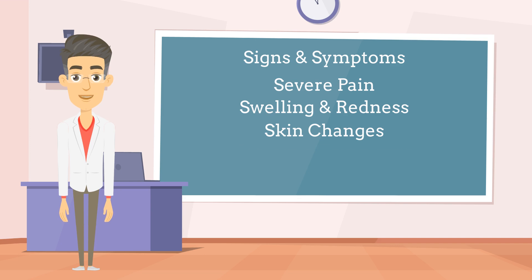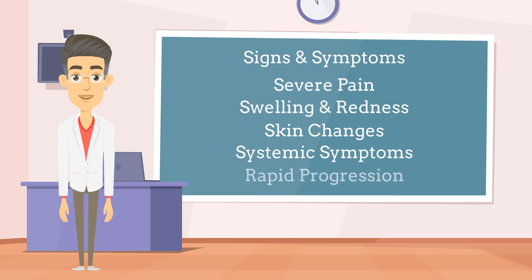Systemic symptoms: as the infection spreads, individuals may experience systemic symptoms such as fever, chills, sweating, malaise, and general weakness. These symptoms indicate a more severe infection. Rapid progression is a characteristic feature of necrotizing fasciitis. The signs and symptoms may worsen quickly, often within hours or days, leading to a deteriorating condition.